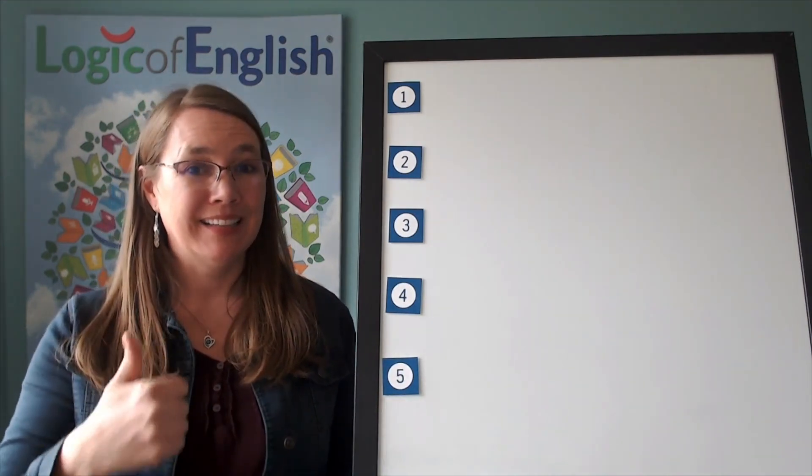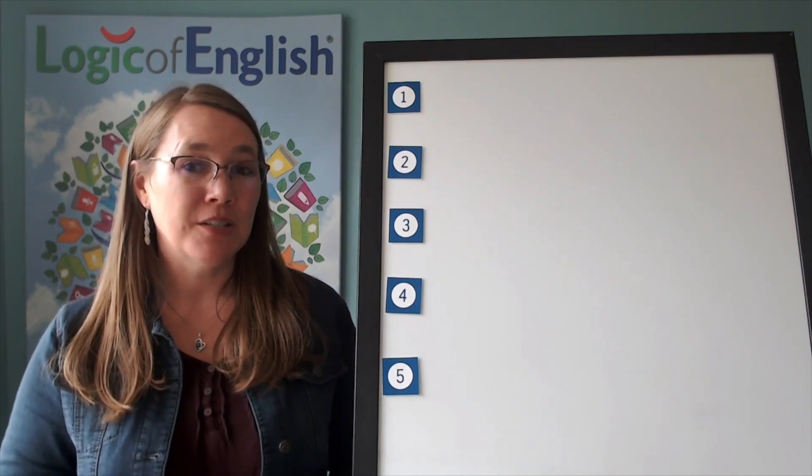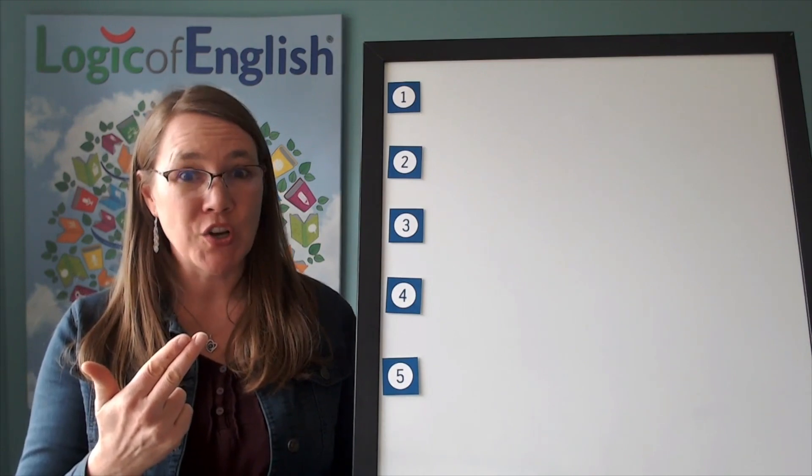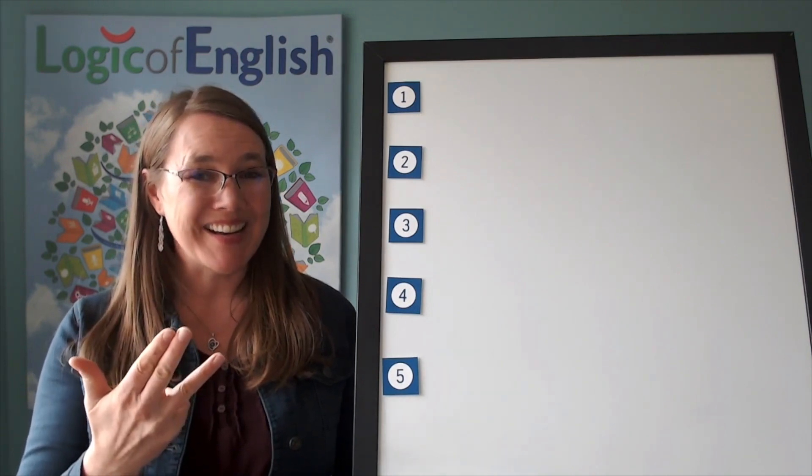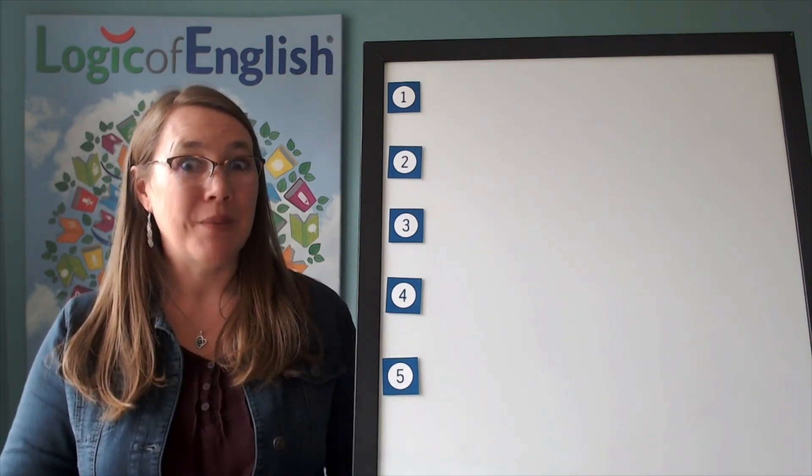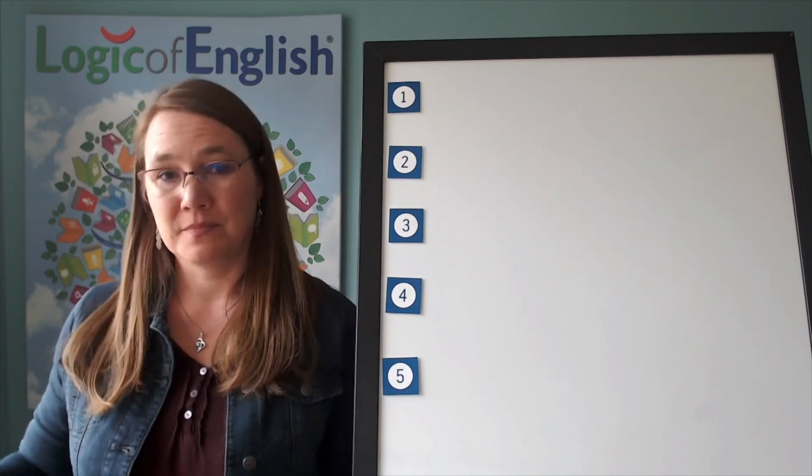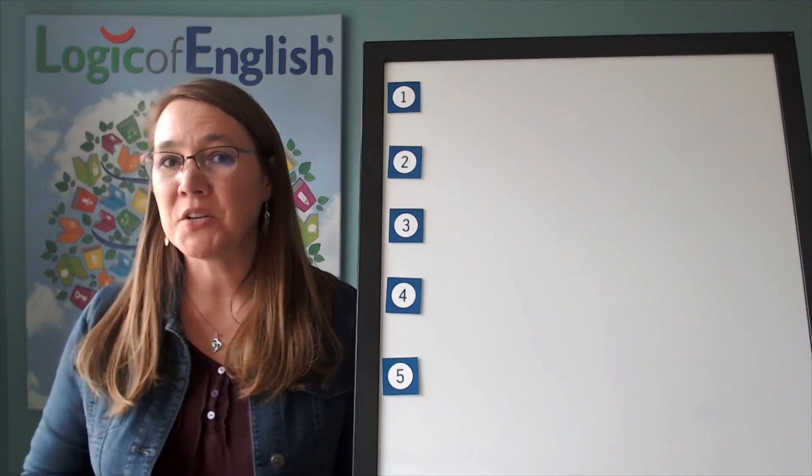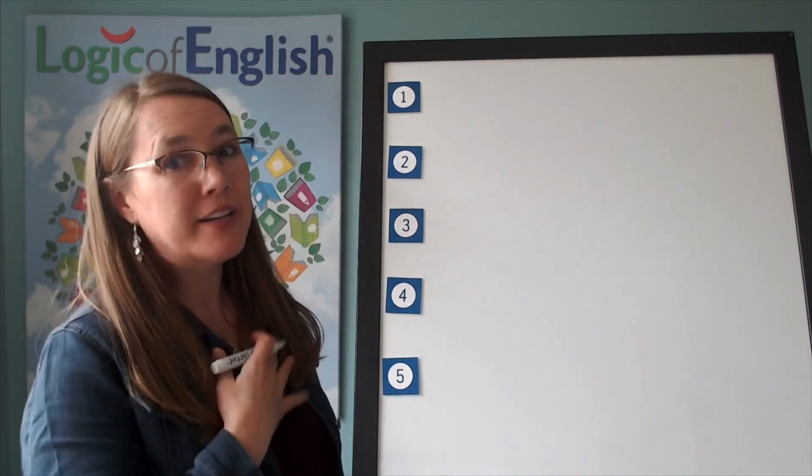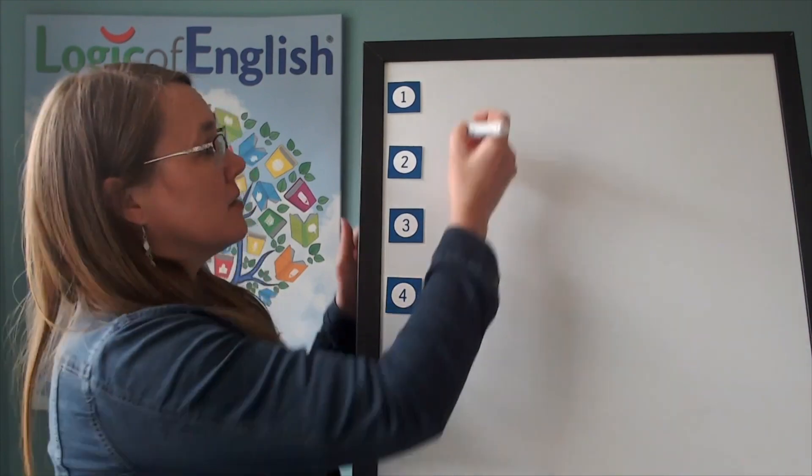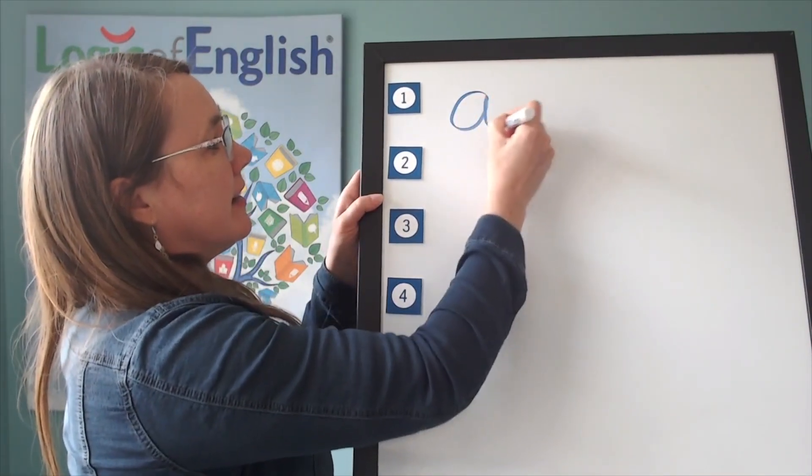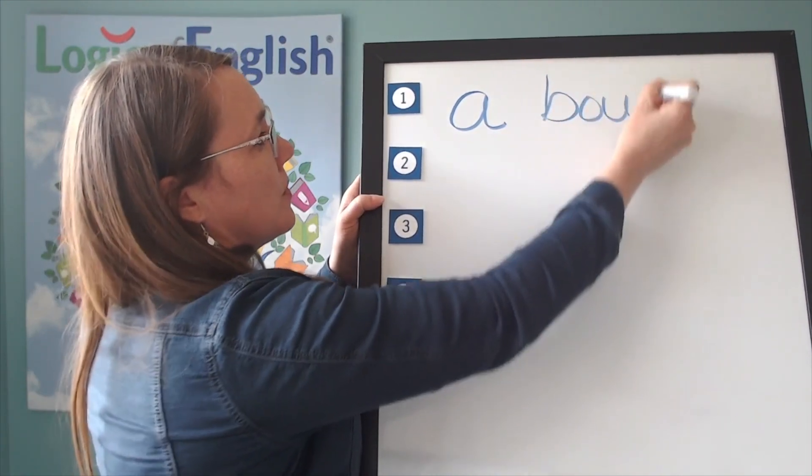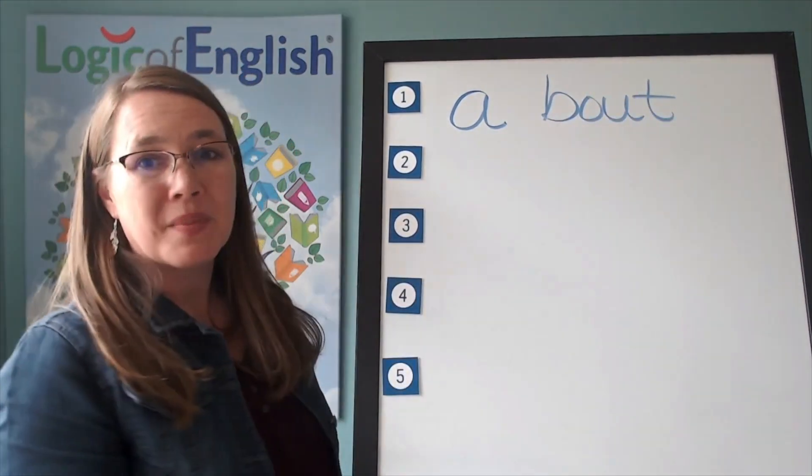The first syllable is a. The second syllable is bout. B-ow. Use an ow-o-oo. T. Got it? Go ahead and write about. I love how you're sounding it out. Okay, it's my turn to write it. The first syllable is a. The second syllable is bout. B-ow-t. All right.